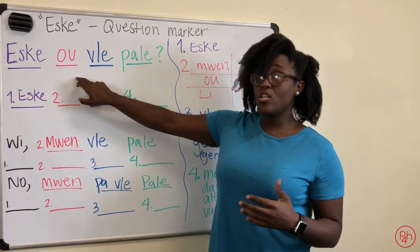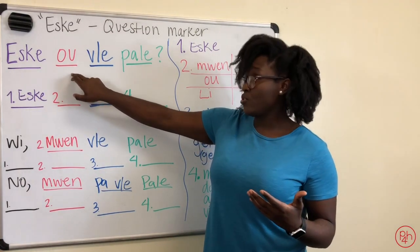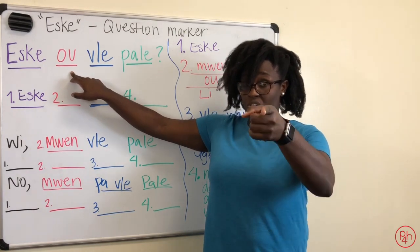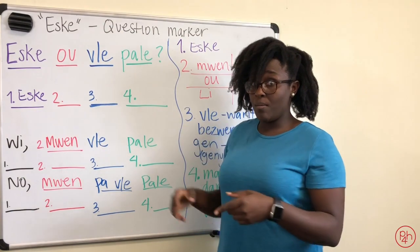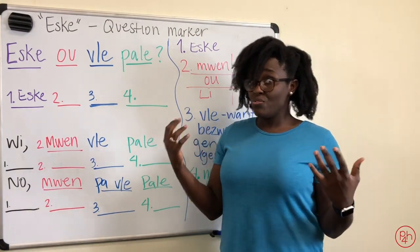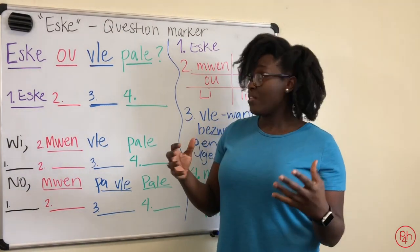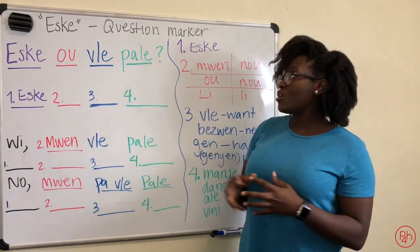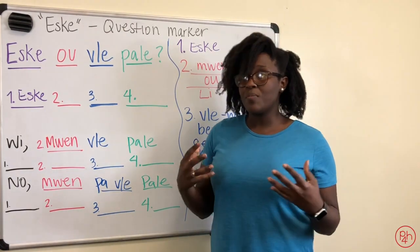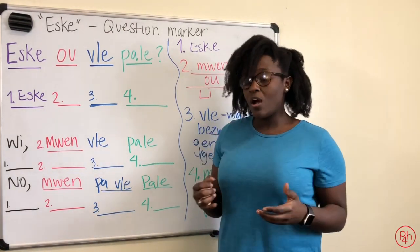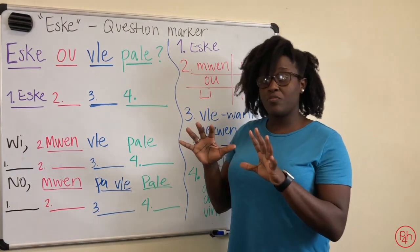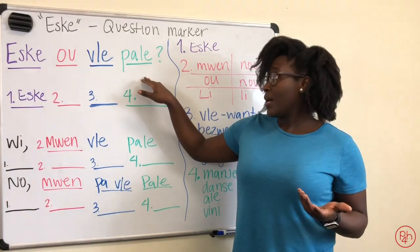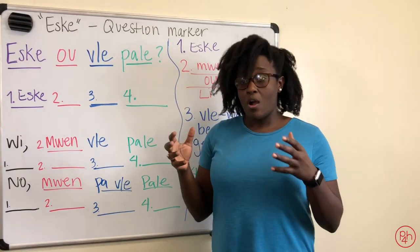Est-ce que, and then you're going to explain who you're talking to. Are you talking about yourself? Mwen? Are you talking to you? Ou? Li — he, she, or it? Nu — is we? Nu — you all? Or yo — is they? Then you're going to use some key words like vle. Vle means want. And then we use our verbs. Parler is to talk.